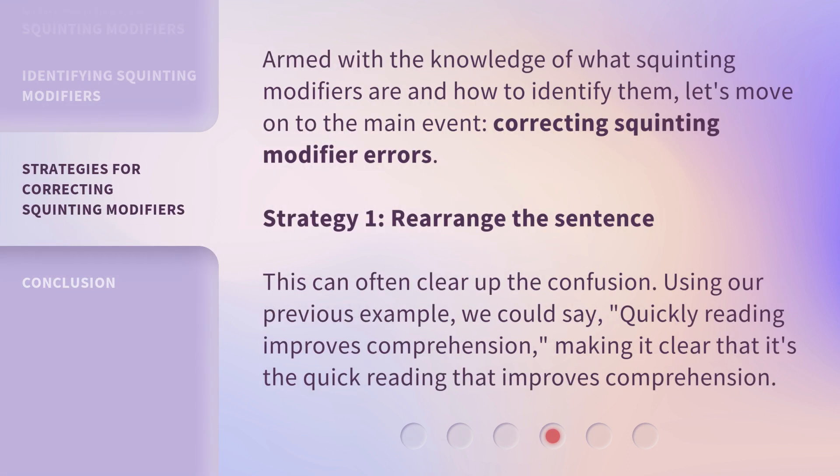Armed with the knowledge of what squinting modifiers are and how to identify them, let's move on to the main event: correcting squinting modifier errors. Strategy 1 — Rearrange the sentence. This can often clear up the confusion. Using our previous example, we could say, "Quickly reading improves comprehension," making it clear that it's the quick reading that improves comprehension.